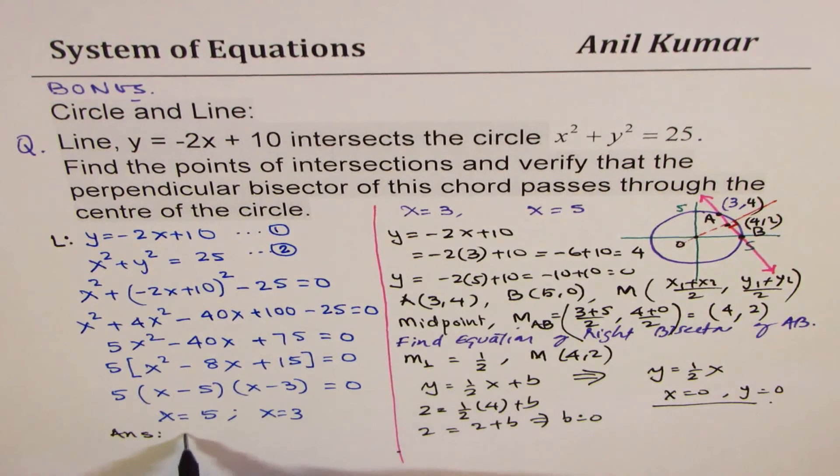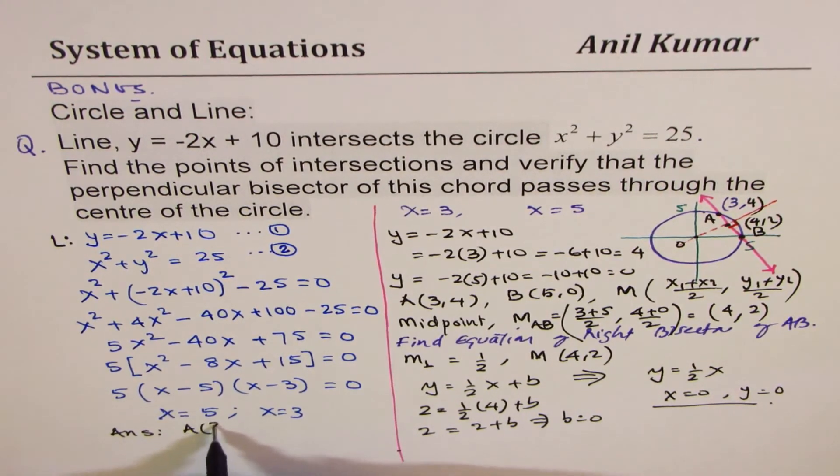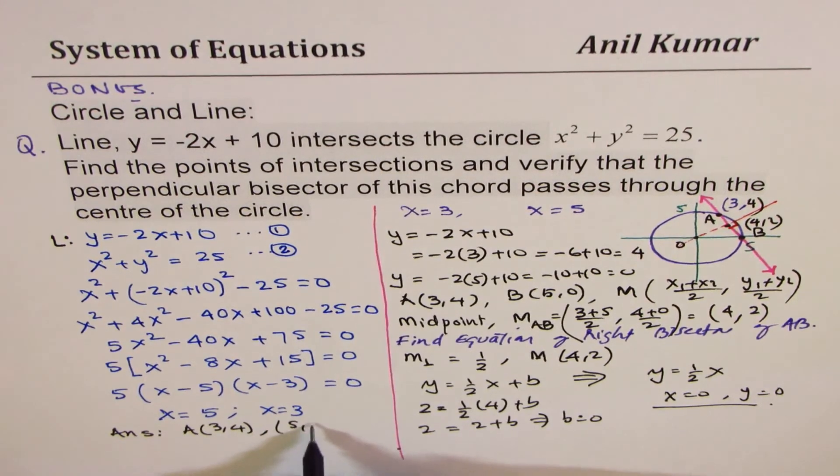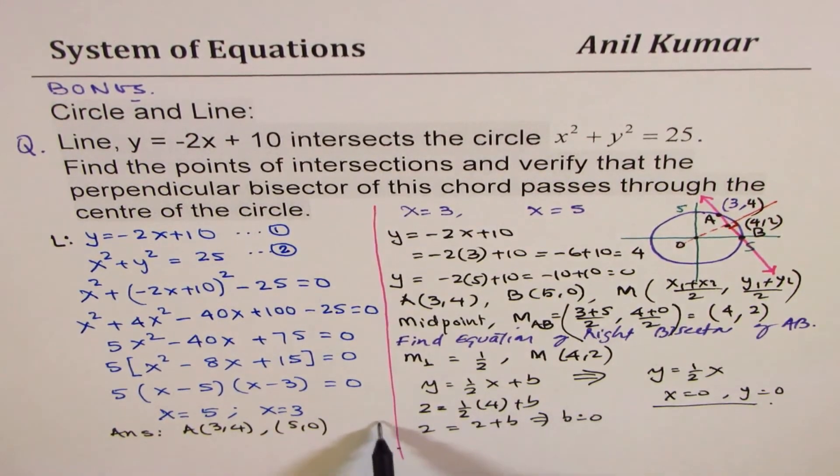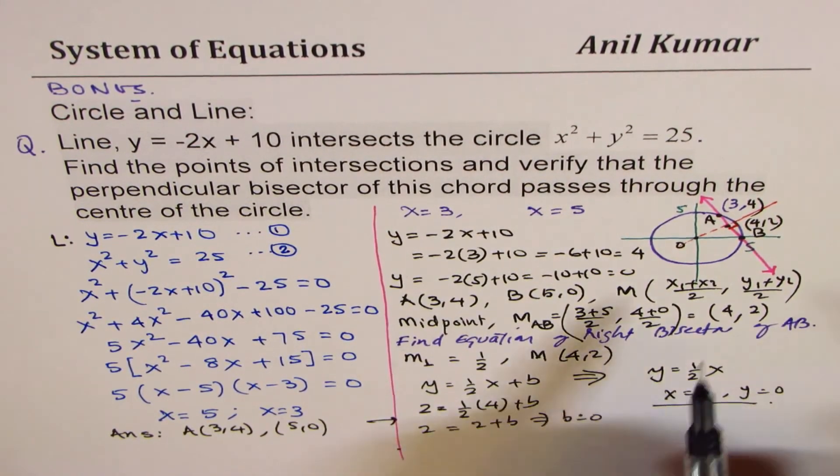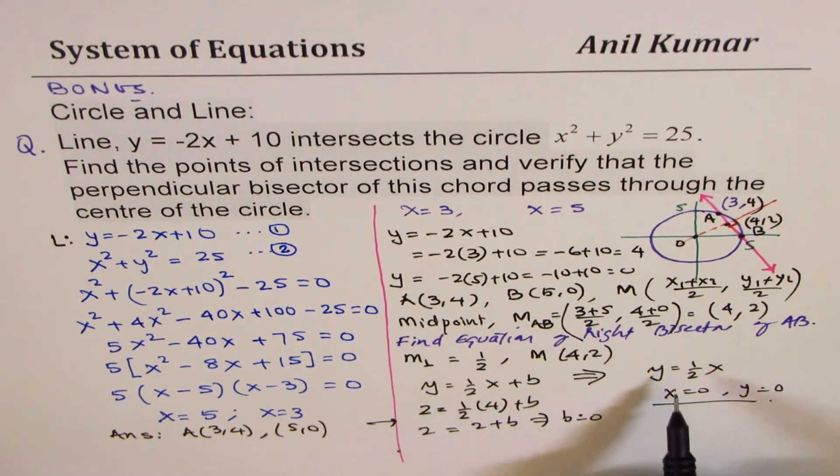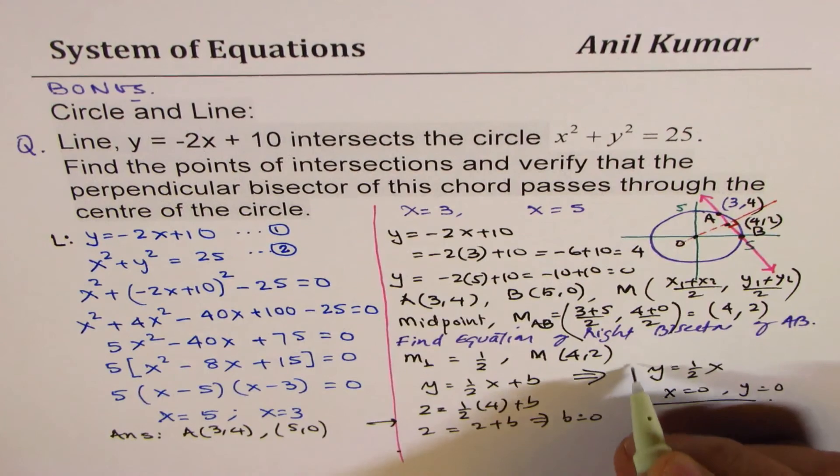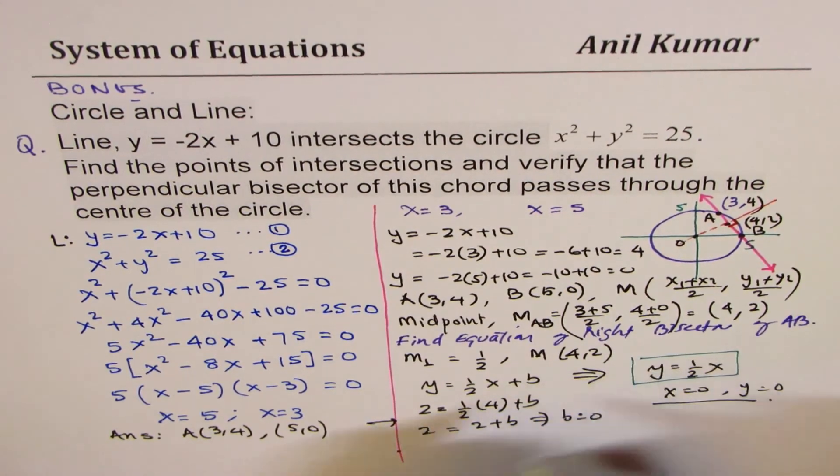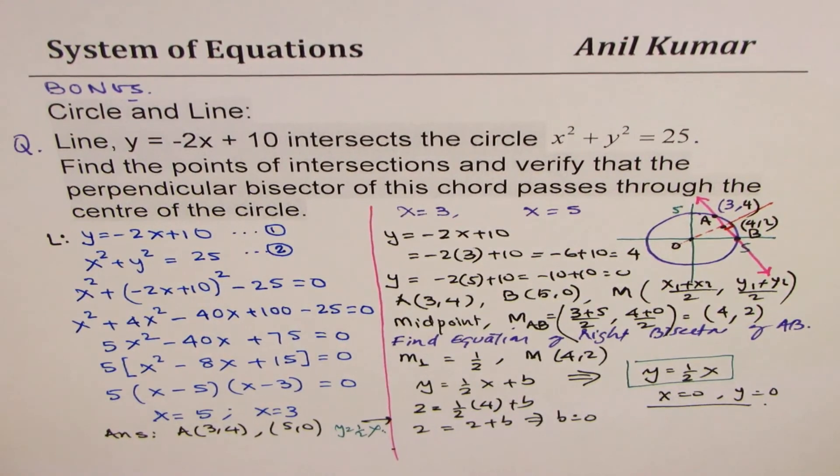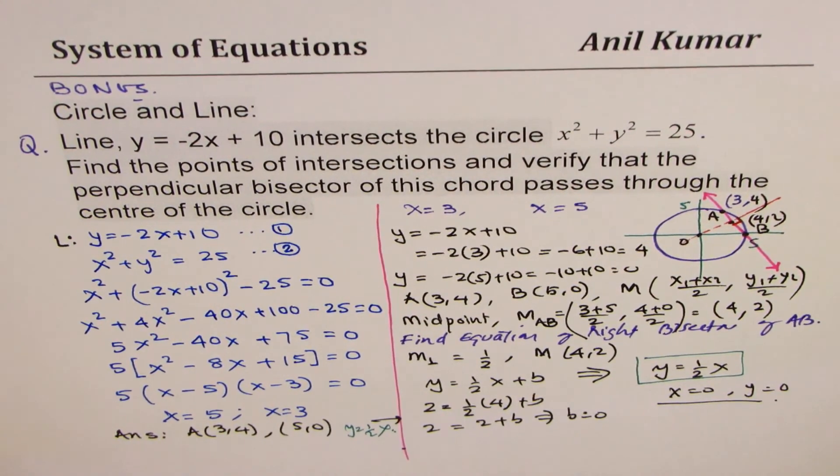Let's write down our answer. So our answer is: the points are 3, 4 and 5, 0. These are the points. And we have shown that the perpendicular bisector of the chord passes through the origin, since its equation is y equals half x, where y-intercept is 0. So I hope that explains how to solve such questions. Thank you and all the best.